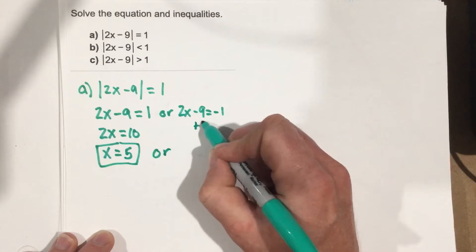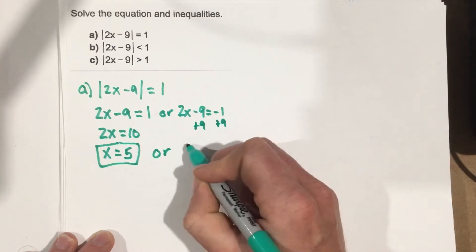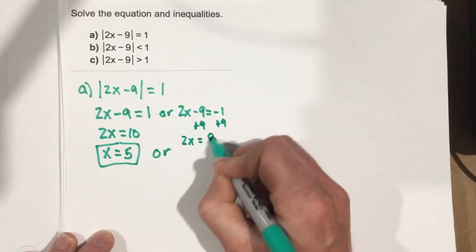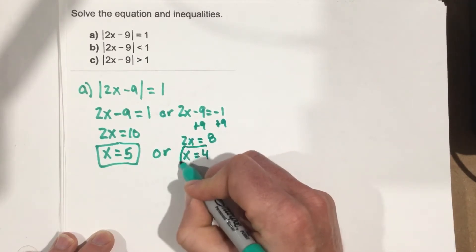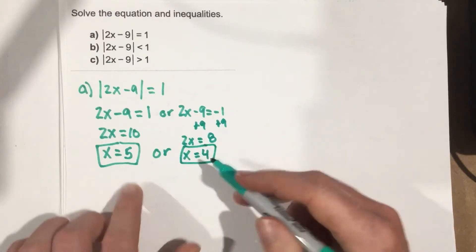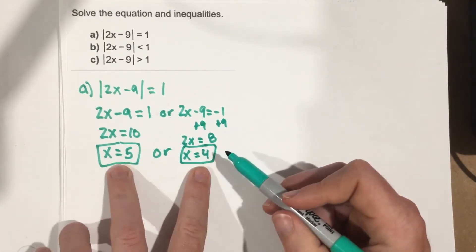Or, add 9, add 9 here, you get 2x equals 8. Divide by 2, you get x equals 4. So for the first part A, 5 and 4 are our two solutions here.